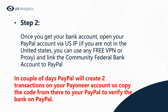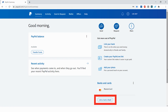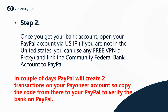Step 2: once you get your bank account, open your PayPal account via US IP. If you're not in the United States, you can use any free VPN or proxy and link the Community Federal bank account to PayPal. Log into your PayPal and at the bottom you have the option to link a card or bank. In a couple of days, PayPal will create two transactions on your Payoneer account — copy the code from there to your PayPal to verify the bank on PayPal.